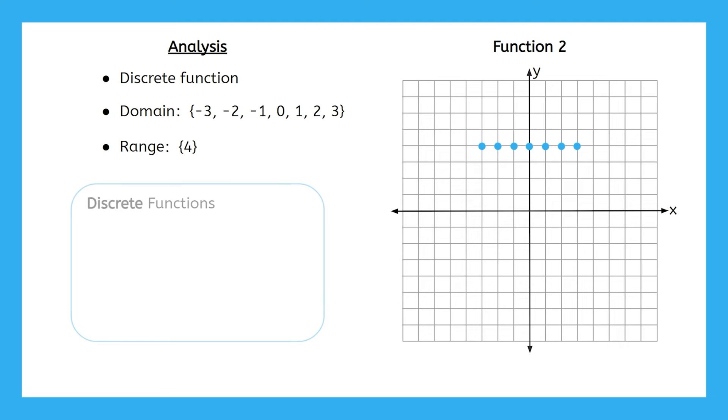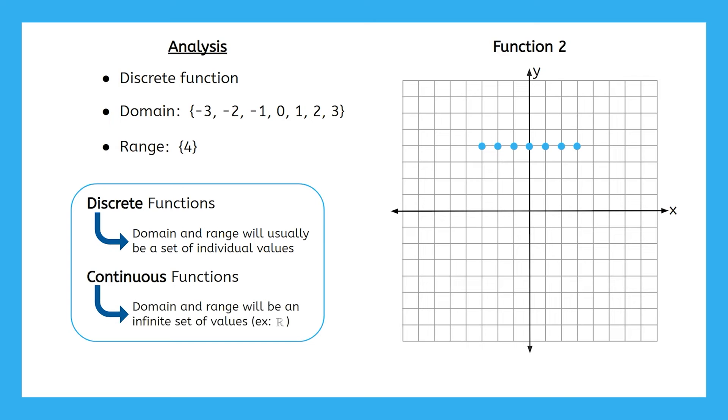Since discrete functions consist of unconnected individual points, their domain and range will usually be a set of individual values like we just saw in this example. However, this is not the case for continuous functions whose domain and range will be an infinite set of values like all real numbers. Now that's a set of numbers that we can't possibly write out one by one in a list.